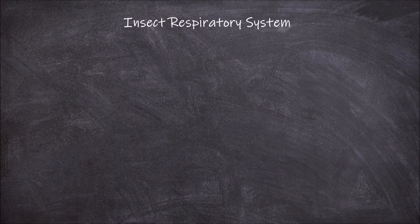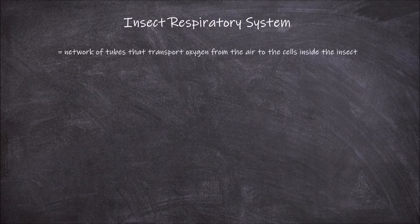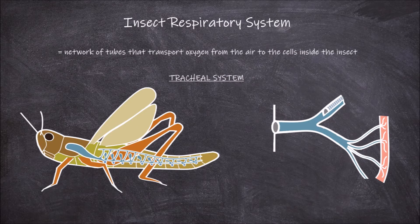The insect respiratory system is the network of tubes that are responsible for transporting oxygen from the outside air to the cells inside the insect. This network of tubes is called the tracheal system.